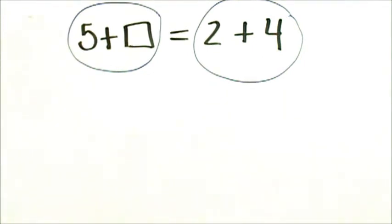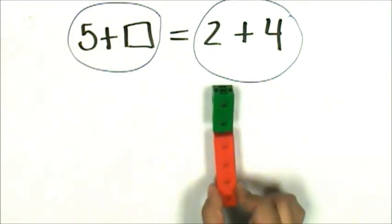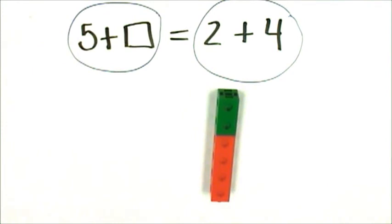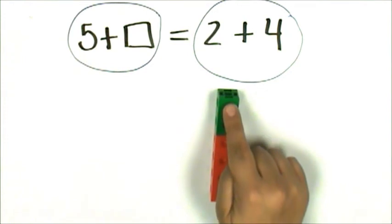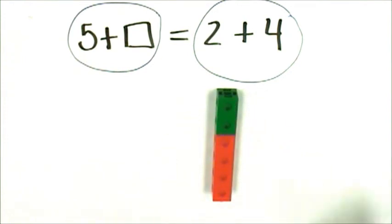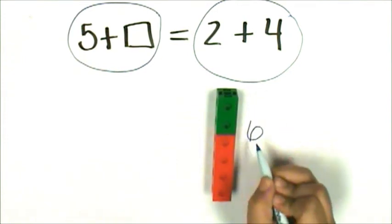Let's make a train that represents 2 plus 4. Here's 2, here's 4. The value of 2 plus 4 is 4, 5, 6. 6 connecting cubes.